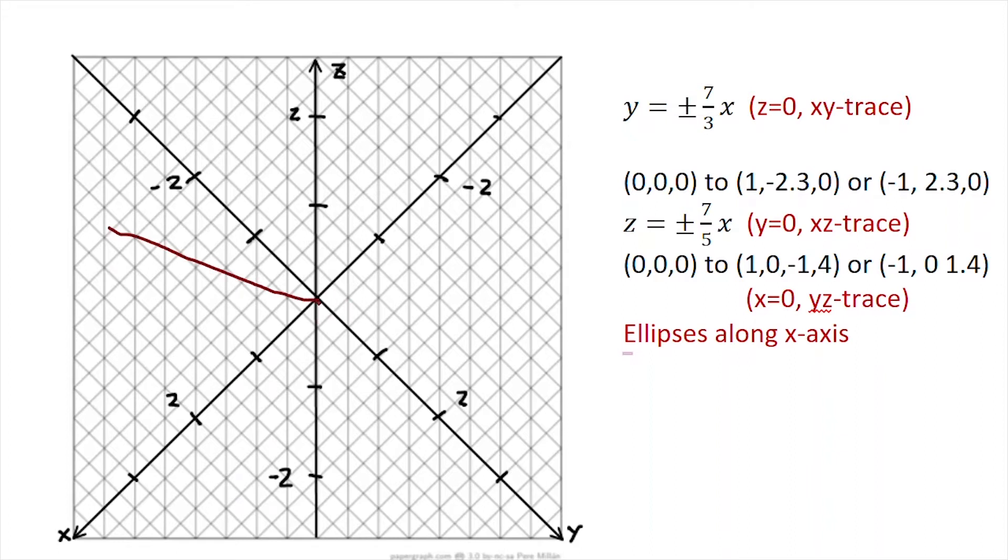And my second line, z = -(7/5)x, is going to look something like this. Then I'm going to have ellipses opening up on the positive x-axis and similarly on the negative x-axis. That's approximately my elliptic cone. I could put some shading in if I want to, but you get the general idea.